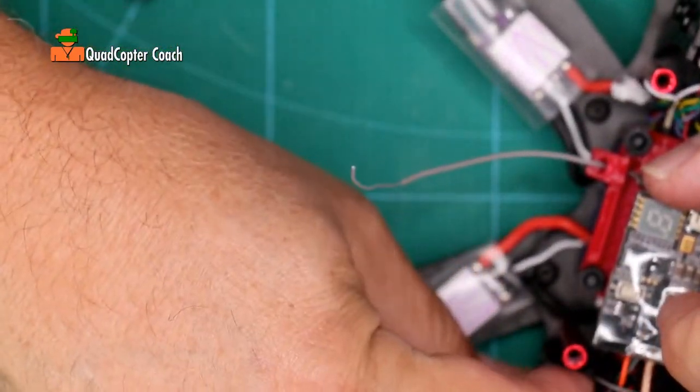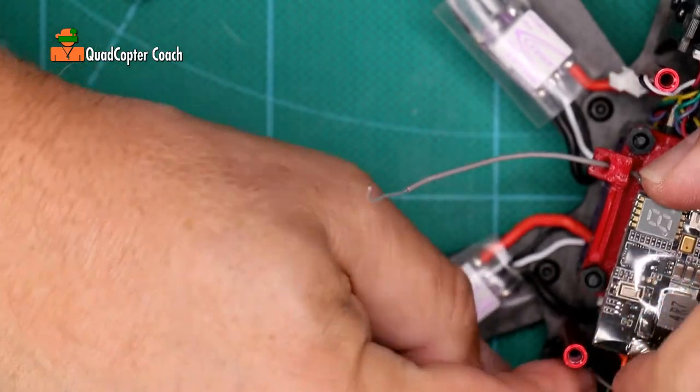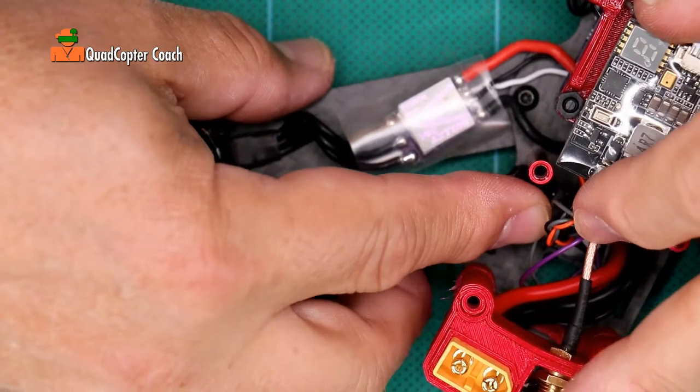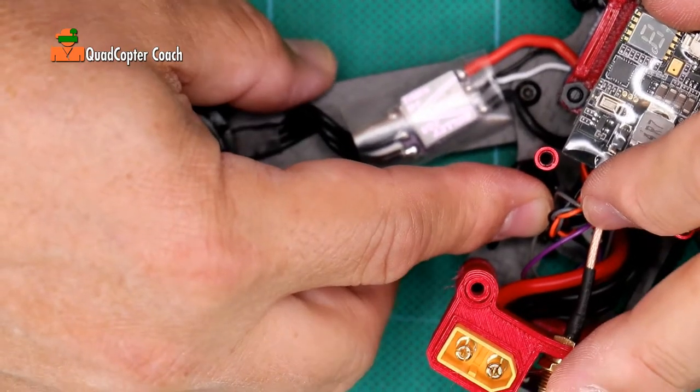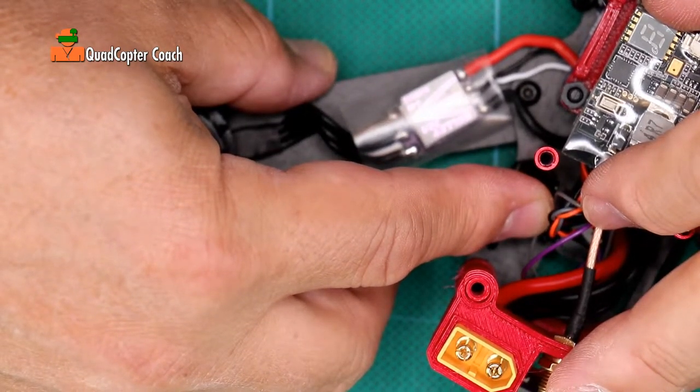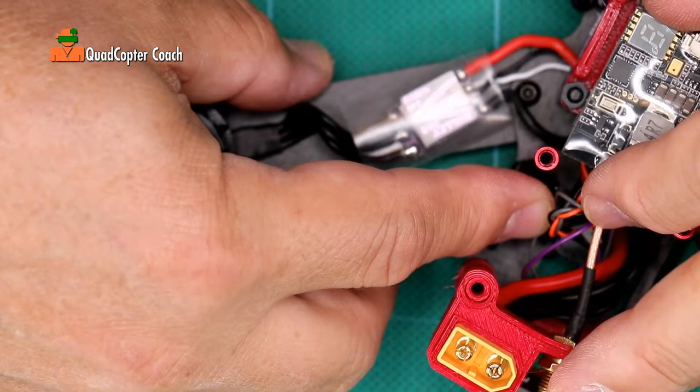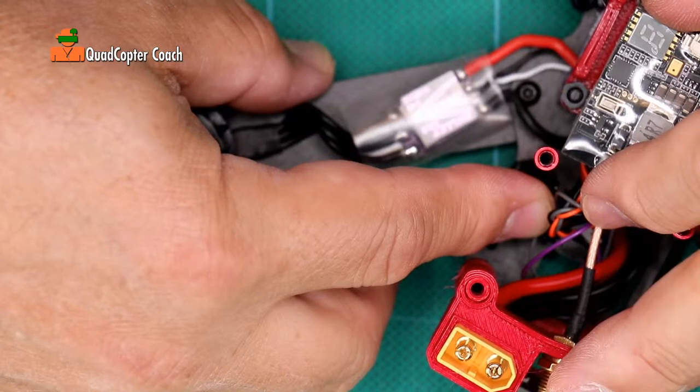Careful not to touch it because it's hot. I'm going to hold it there for just a moment till that glue settles in. I'd rather use hot glue than double-sided tape because it's more secure, and if I want to move it, I just use my heat gun. It softens it up and comes right out.